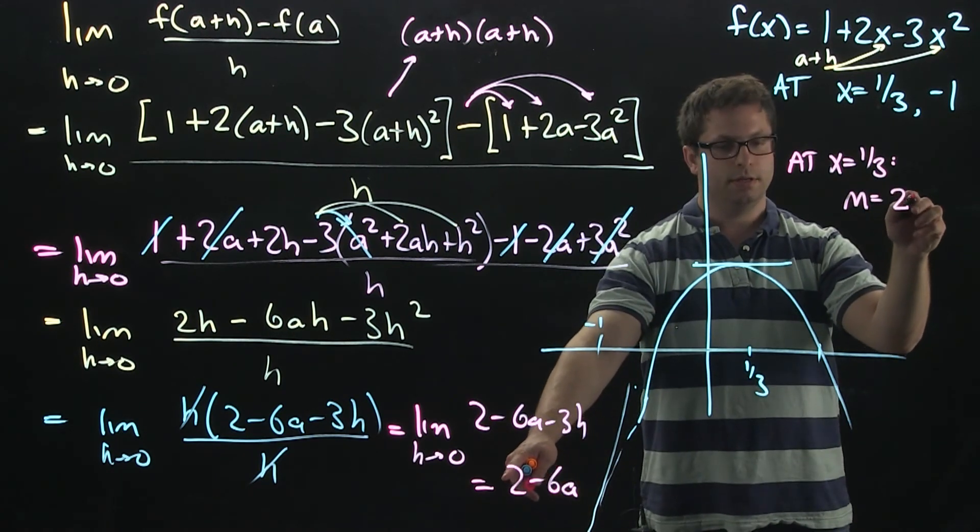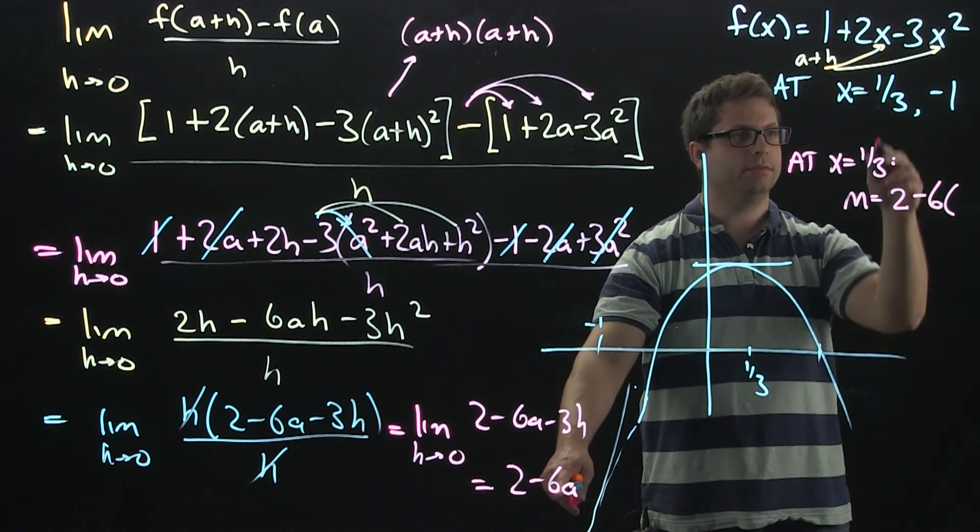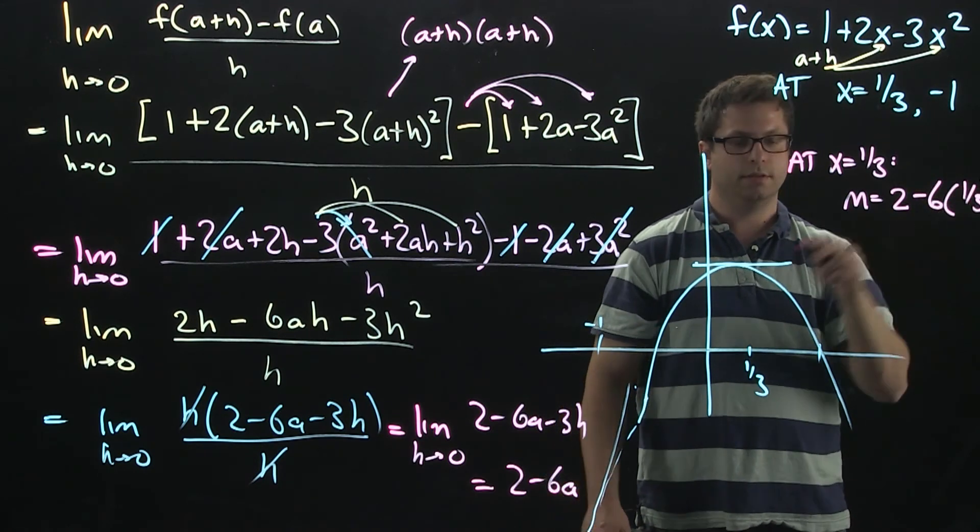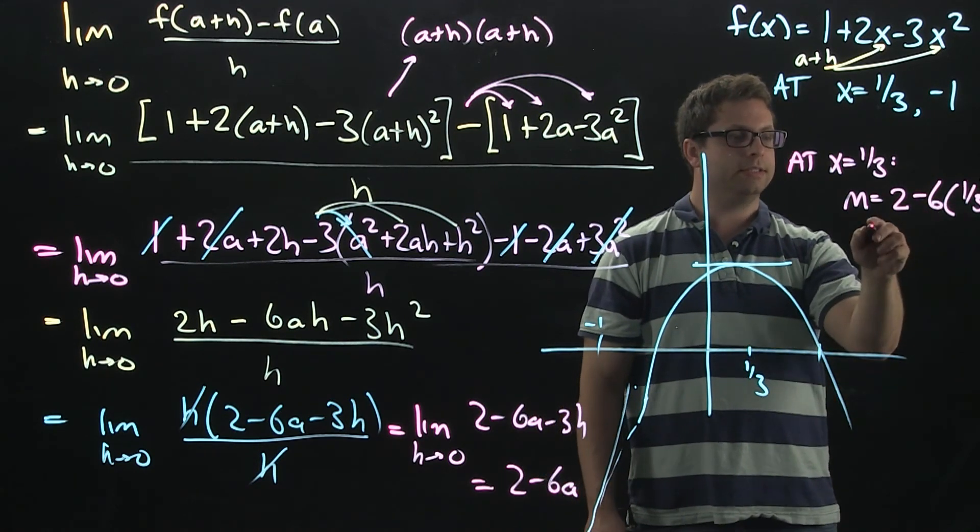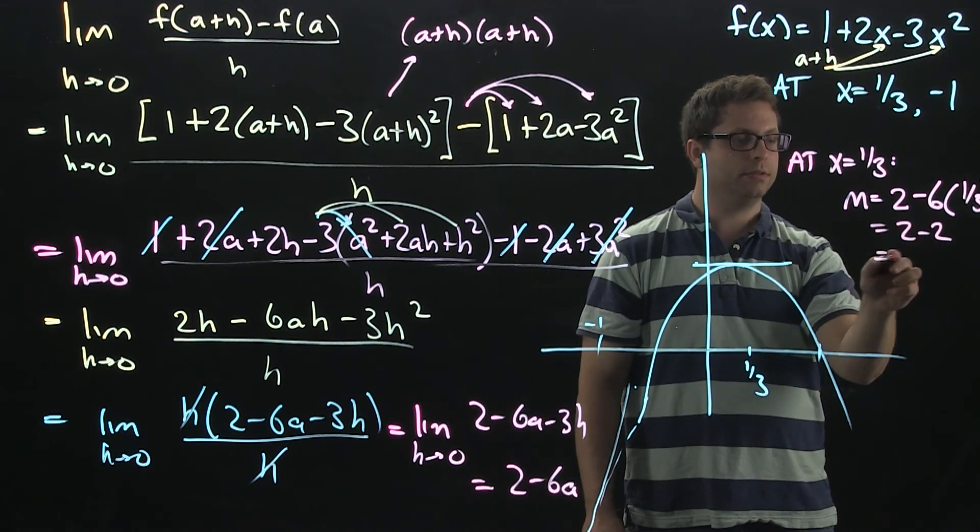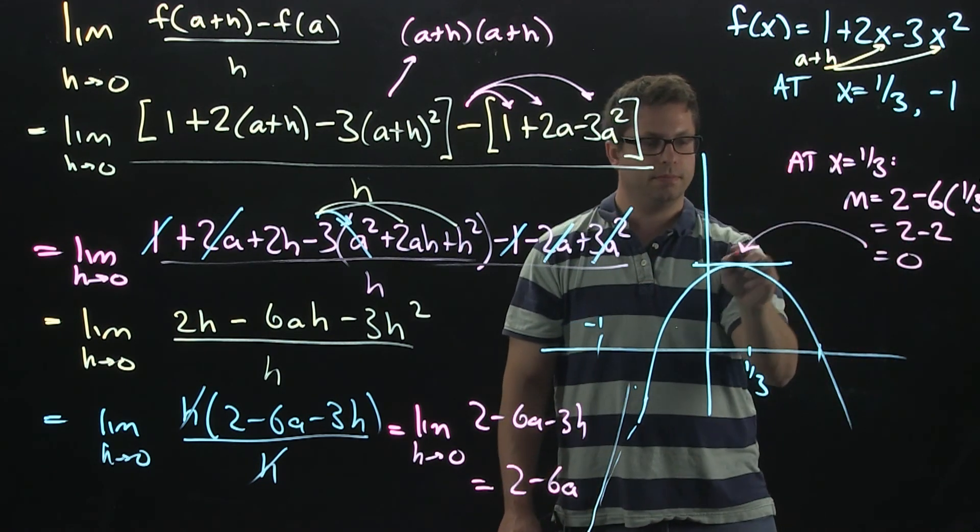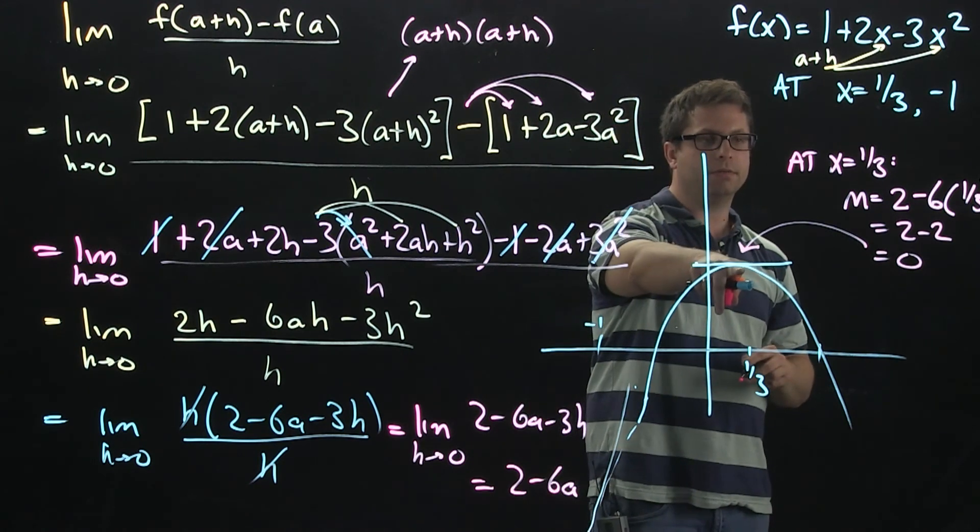We got 2 minus 6 times a, which is a third. So, that's 2 minus 2 is zero. That does confirm that we thought the slope here was going to be zero.